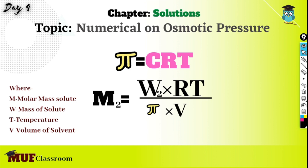At first, we have osmotic pressure. Osmotic pressure is nothing but the external pressure applied on a solution to prevent osmosis.